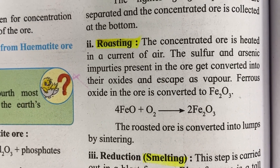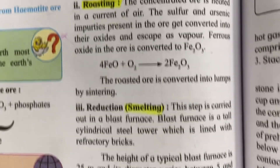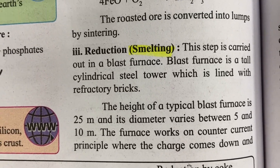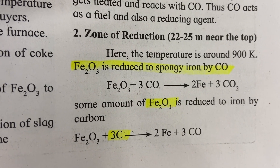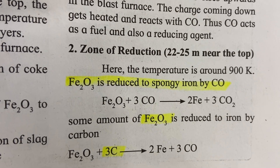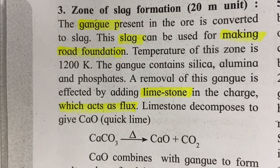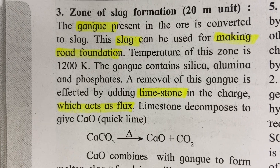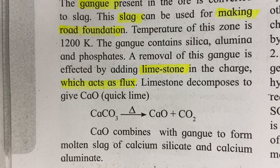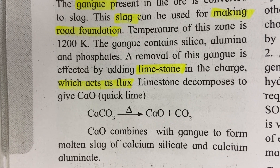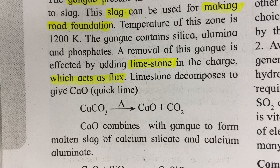Roasting: the concentrated ore is heated in a current of air — that is roasting. Smelting is essentially reduction. Hematite (Fe₂O₃) is reduced to spongy iron by carbon monoxide, and some amount of hematite is reduced to iron by carbon. The slag can be used for making road foundations. Limestone is used as flux, and calcium oxide combines with gangue to form molten slag.